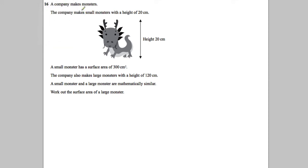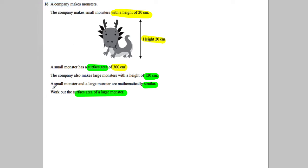A company makes monsters. The small monster has a height of 20 centimeters — this picture represents that. The small monster has a surface area of 300 centimeters squared. The company also makes large monsters with a height of 120 centimeters. A small monster and large monster are mathematically similar. Work out the surface area of the large monster. You just need to know your facts about similarity.